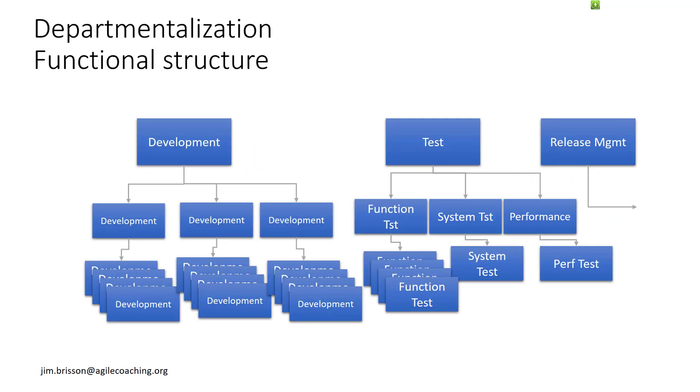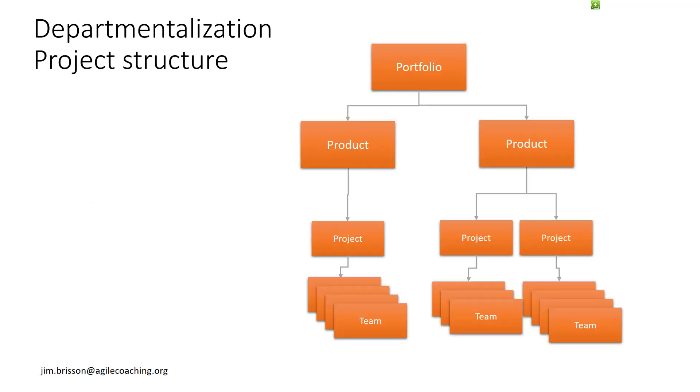So departments can be organized by the function that team members provide. So teams of developers are in departments separate from those of function testers and so on. Now, in a project structure, you might have a portfolio of products where each product has one or more projects and multiple teams work on projects.